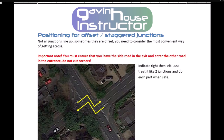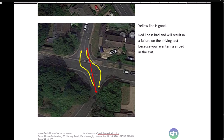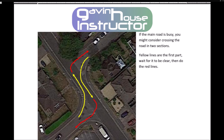Positioning for offset or staggered junctions — not all junctions line up, sometimes they are offset. You need to consider the most convenient way of getting across. You must ensure that you leave the side road in the exit and enter the other road in the entrance — do NOT cut corners. Indicate right then left; just treat it like two junctions and do each part when safe. The yellow line route is good; the red line route is bad and will result in a driving test failure because you are entering a road in the exit. If the main road is busy, consider crossing in two sections — do the first part and wait until the second part is clear, then continue.